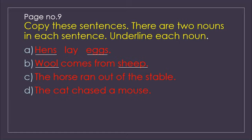The third sentence is: the horse ran out of the stable. Stable is the house of the horse. So the two nouns are horse and stable. The last one is: the cat chased a mouse. Cat is an animal and mouse is also an animal. I told you before that all animals and birds are also nouns. So we underline cat and mouse.